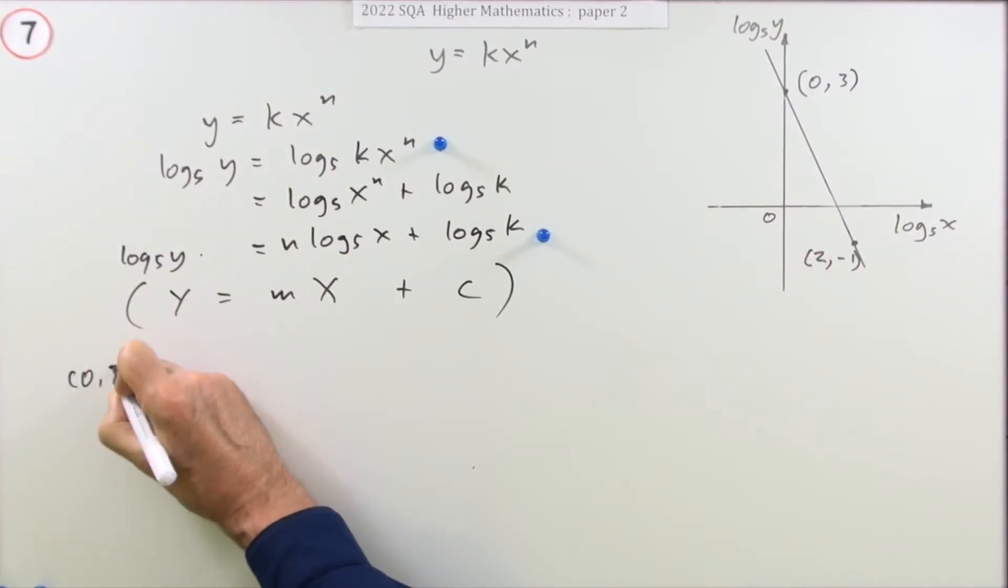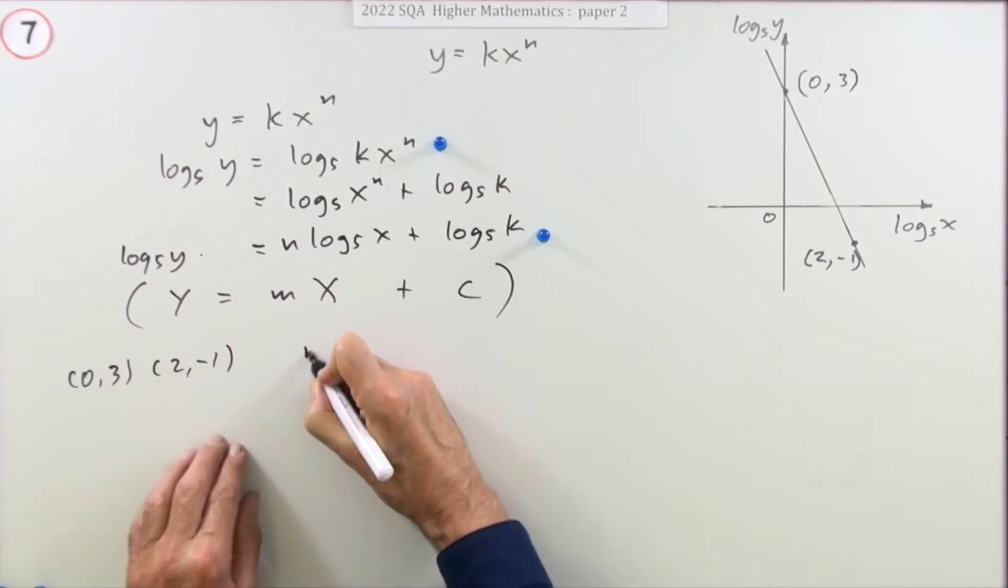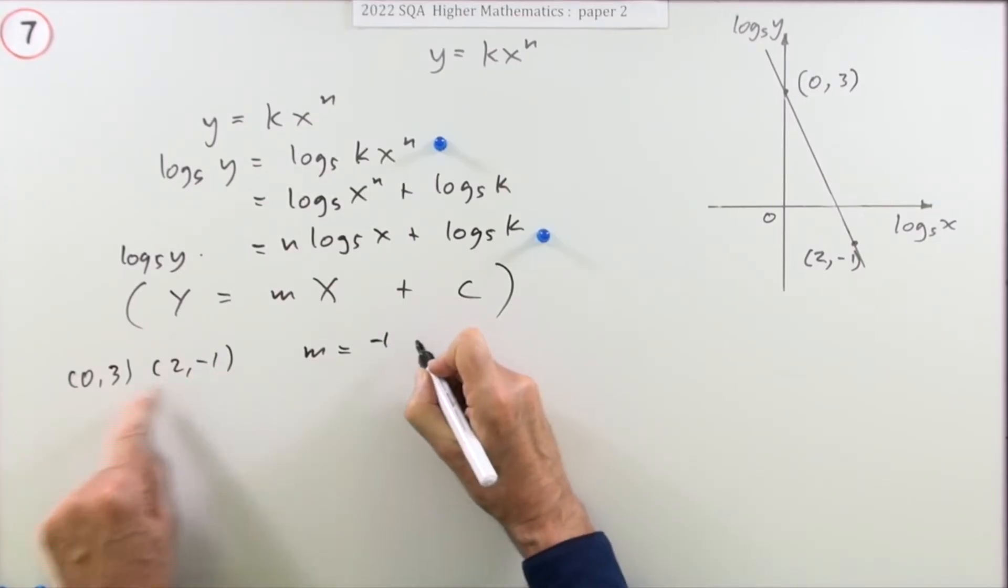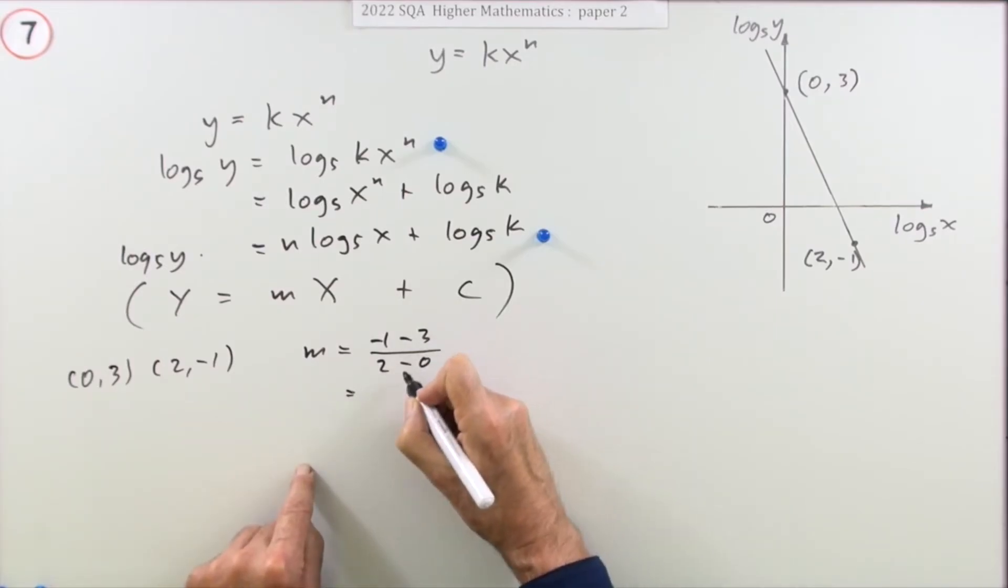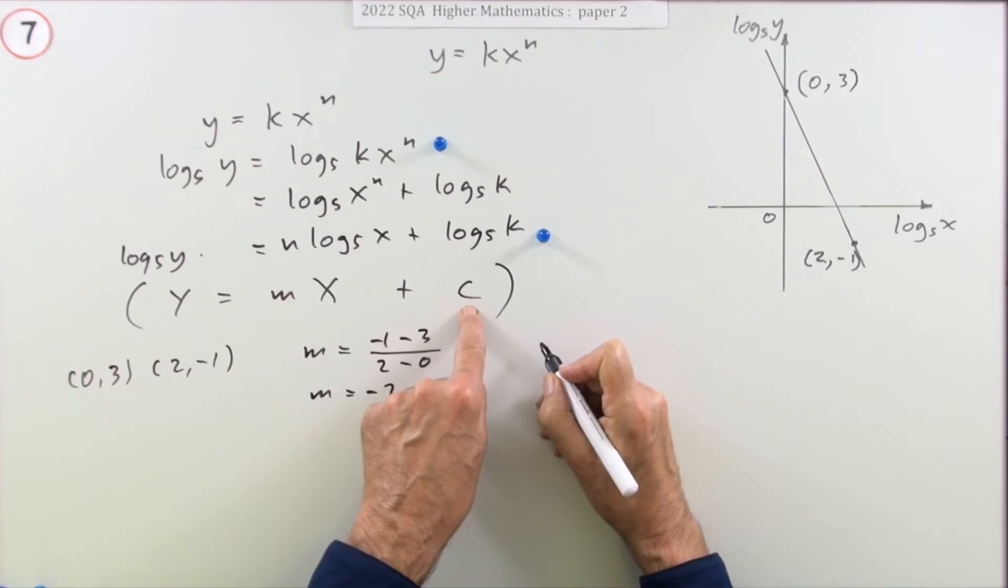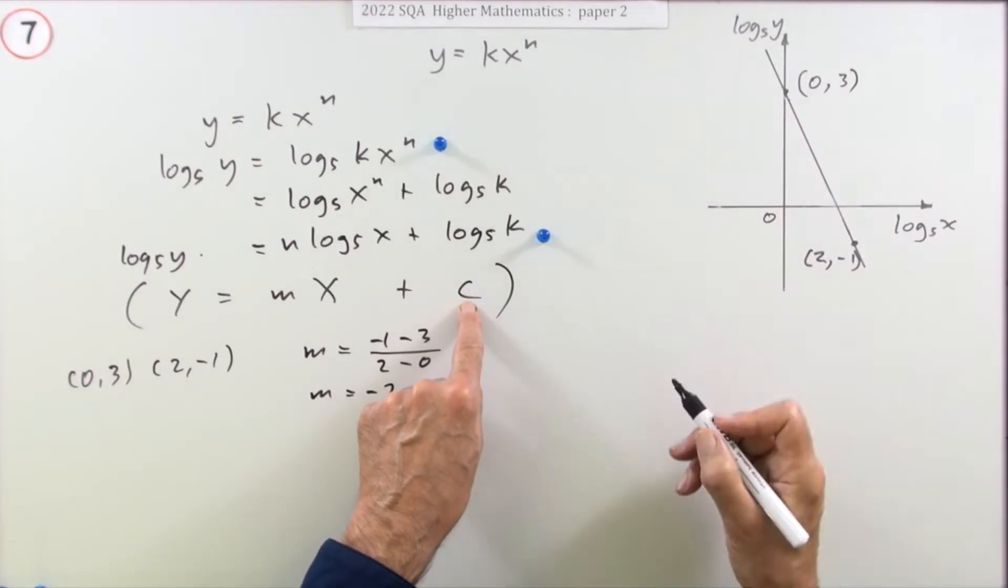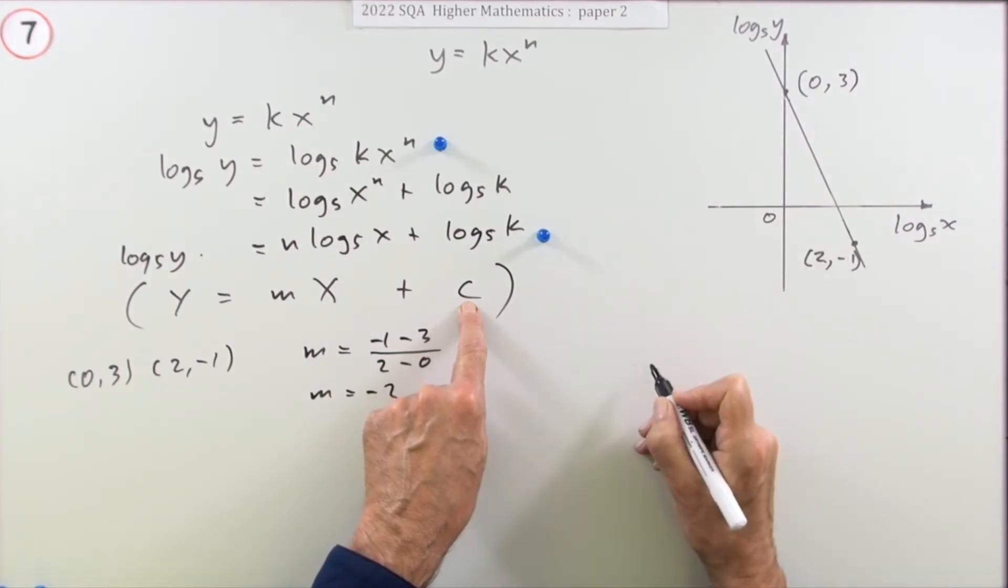Since you've got these two points, you've got (0, 3), and you've got (2, -1), the gradient of that line would be difference in the y's over difference in the x's. That's -4 over 2 is -2. The constant, well, you could either read that straight off, because you know where it cuts the y axis. So you know the constant's 3. So that's probably what I would do first, just say the constant equals 3.